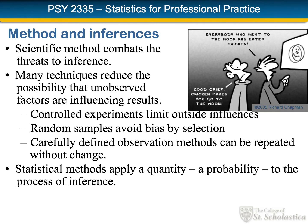The scientific method tries to combat poor logic and unobserved influences. There are many techniques that reduce the possibility of unobserved factors. Experiments control and limit outside influences. When we use random samples, we're avoiding bias that might happen if selections were made without a random method. When we define our observation methods with great precision, we can apply them time after time without variation. Our statistical methods apply a probability to the process of inference so we can say how likely it is that our inference is accurate.